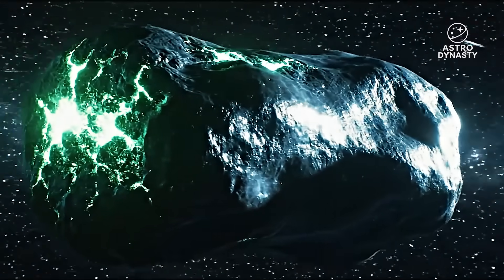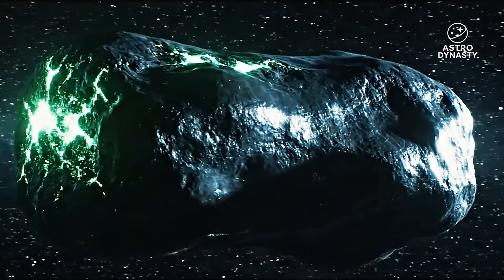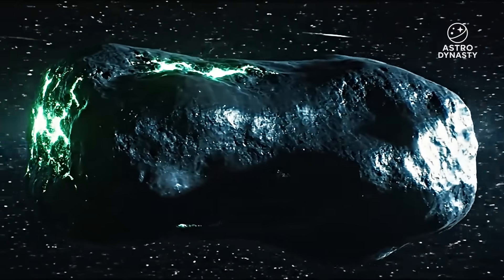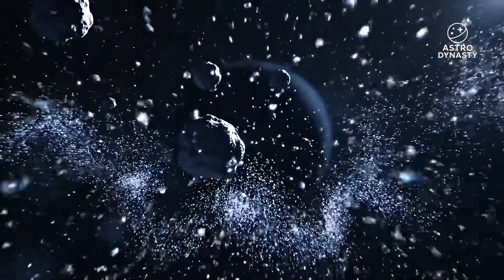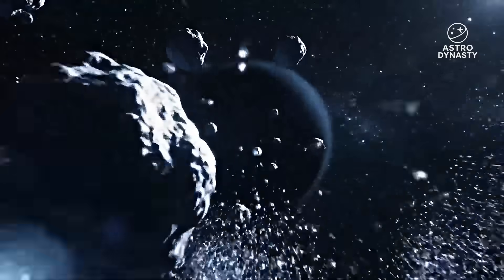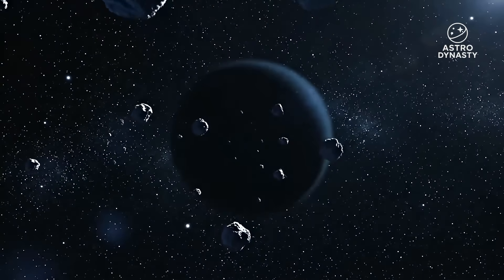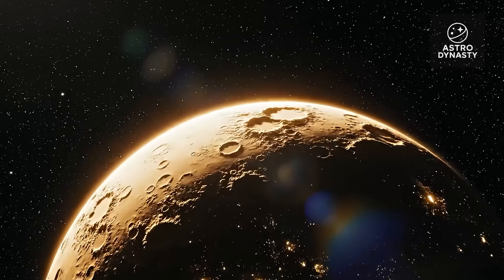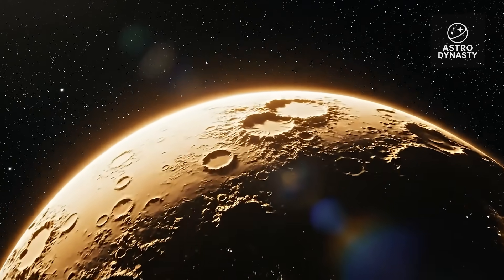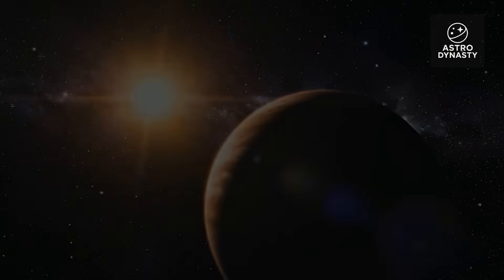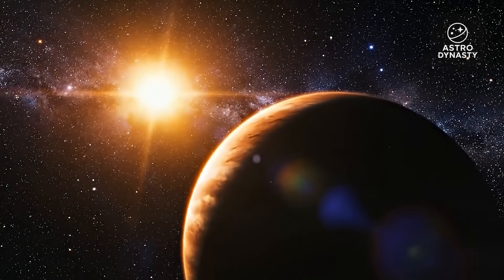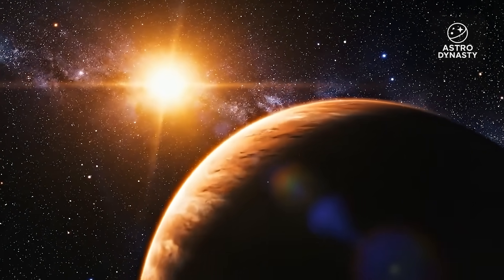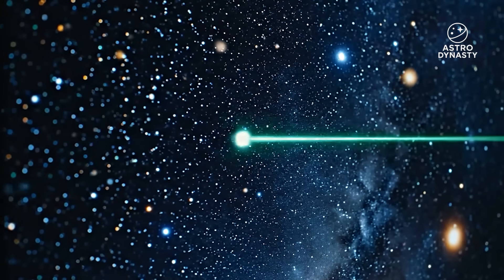Second, gravity did it. Perhaps a hidden mass, a rogue planet, a black hole fragment tugging invisibly. But gravity curves gently, it paints arcs not corners. And for such a sudden deflection, that mass would need to be enormous and close. Nothing like that has appeared in any sky survey - unless it's dark and waiting.